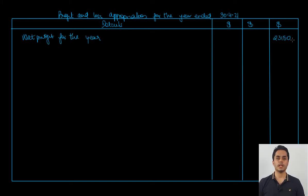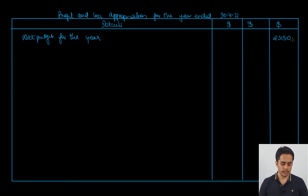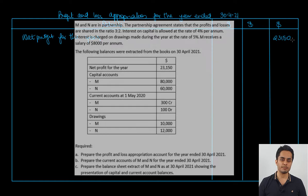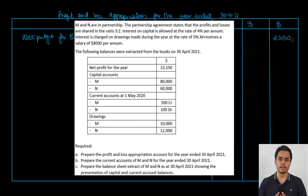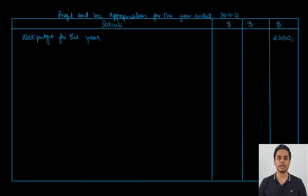To this net profit, we will be adding the interest on drawings that the firm is going to charge the partners. The rate of interest on drawings is 5%. Partners' drawings are given: M is 10,000 and N is 12,000. We apply the rate on the annual drawings, calculate the interest on drawings, and record it in the financial statements.